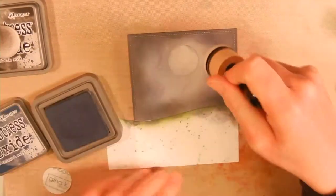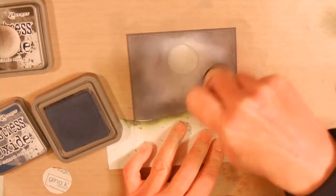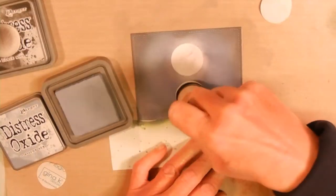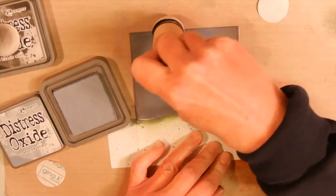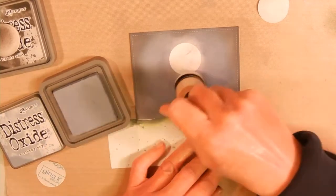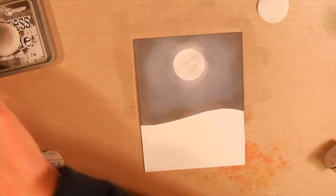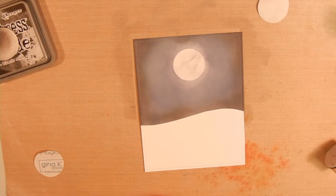Then I keep alternating between the colors until I get the blend that I want. After I remove the mask from the moon, I went over it a little bit with the ink to make it look like clouds are floating over the moon. The fun part is removing the mask to see what's revealed.